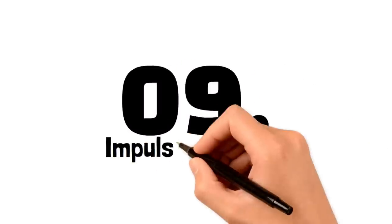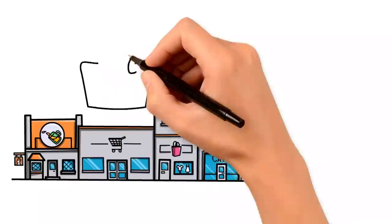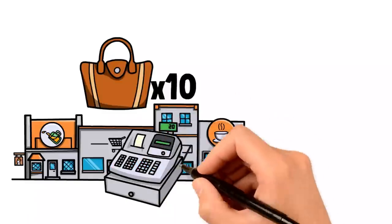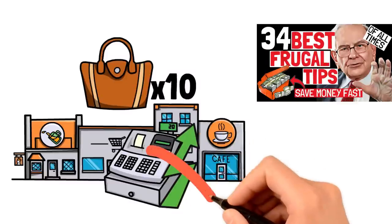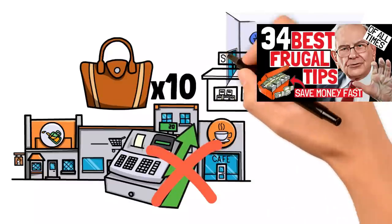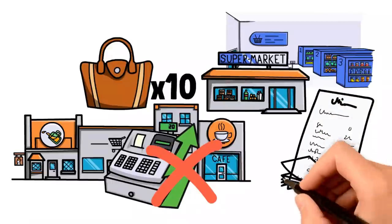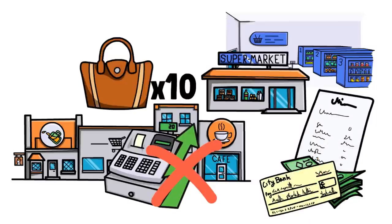Number nine, impulse purchase. I mean, you don't actually need 10 Gucci bags. Deep down, we know what the essentials in our lives truly are. Everything else is just clever marketing tactics aimed at brainwashing us into thinking we can't live without a certain product, even though we only want it for a fleeting moment. It's time to learn the difference between need and want.